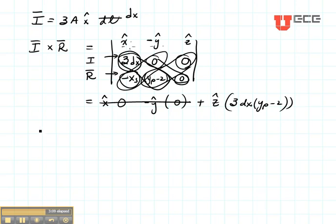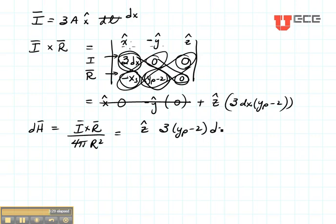Now let's apply Biot-Savart Law. Here I want to find my magnetic field and it's going to be I cross R divided by 4π R squared. So it's going to be Z hat 3 times YP minus 2 times dX divided by 4π.